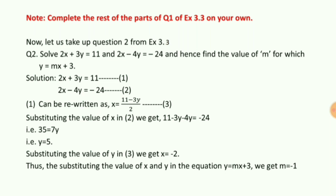From the first equation, I get x equal to 11 minus 3y upon 2. I substitute this in the second equation: twice of (11 minus 3y) upon 2, minus 4y equal to minus 24. The 2s cancel to give 11 minus 3y minus 4y equal to minus 24, that is 35 equal to 7y, so y equal to 5. Substituting y equal to 5 into the expression for x gives x equal to 11 minus 15 upon 2, which is minus 2. Using x equal to minus 2 and y equal to 5 in y equal to mx plus 3, I get m equal to minus 1.